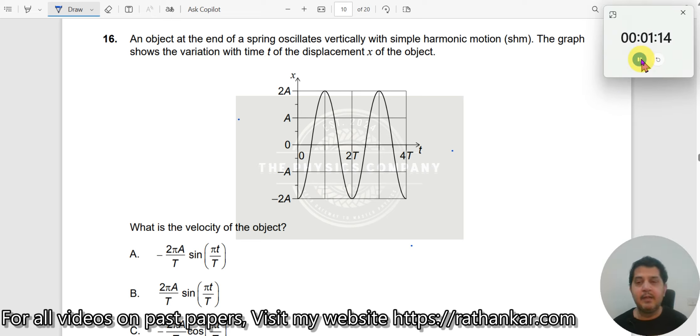Question number 16. So an object at the end of spring oscillates vertically with simple harmonic motion. The graph shows the variation with time t. This is a sinusoidal graph being shown.